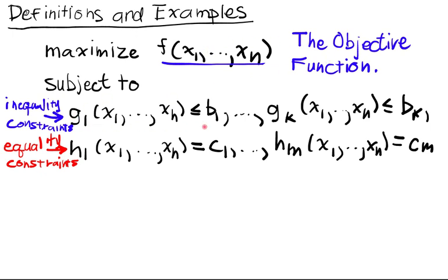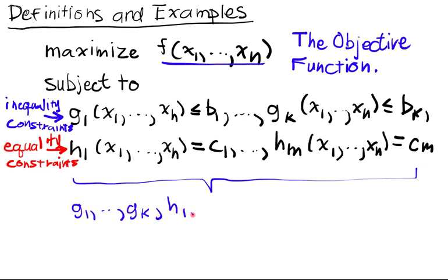These guys are all the constraint functions. So taken together, g1 up to gk and h1 up to hm are constraint functions.